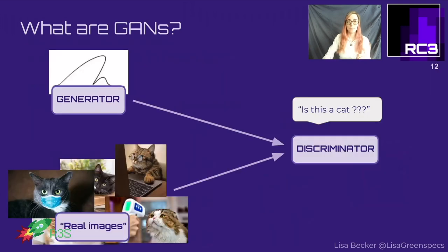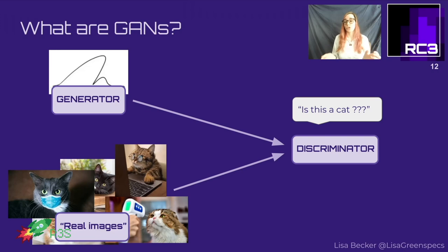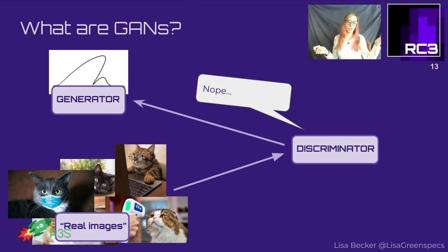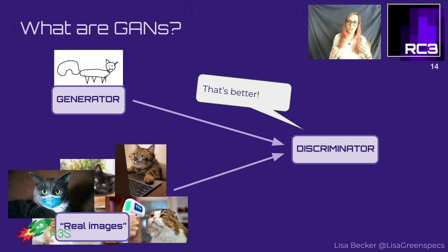So how does this work together? The generator, which only gets random noise at the beginning, starts drawing very random stuff - blobs, black and white lines all over the place - and forwards those generated images to the discriminator. The discriminator, who doesn't know yet what a cat is, makes a guess: is this squiggly line a cat or not? Let's say it gives back 'no, this is not a cat' to the generator. The generator then knows it has to change something, so it keeps trying until it gets closer to what an actual cat is supposed to look like.